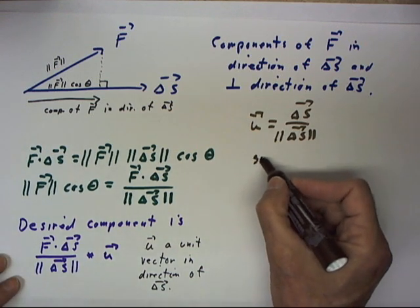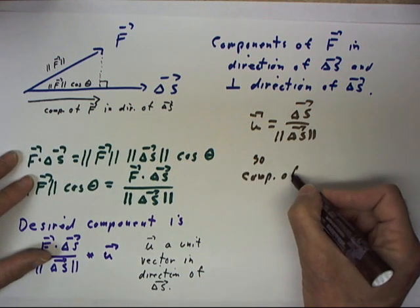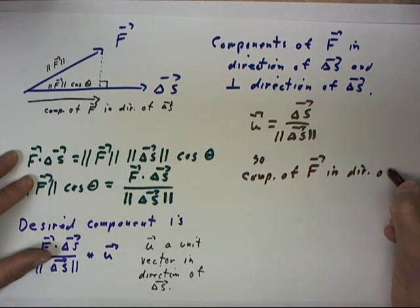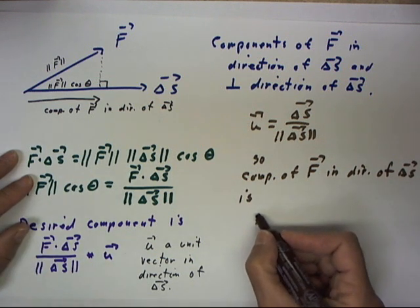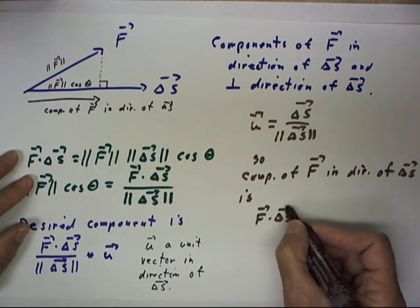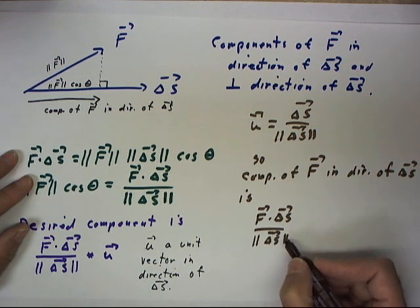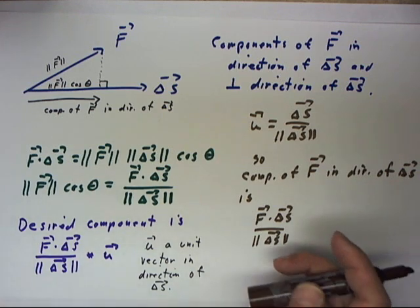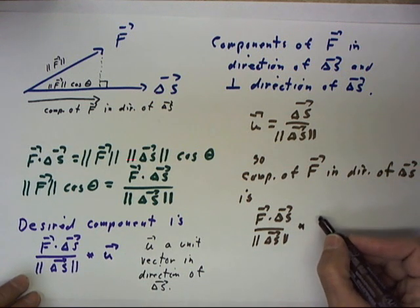So, the component of f in the direction of delta s is f dot delta s over the magnitude of delta s. This tells you how big that component is, and also whether it's in the direction of delta s or opposite. And then we just multiply that by the unit vector.